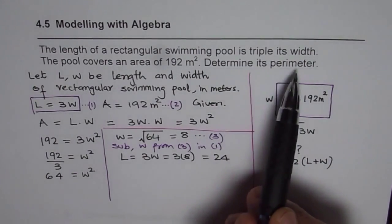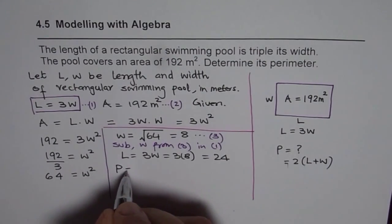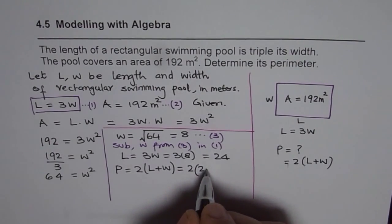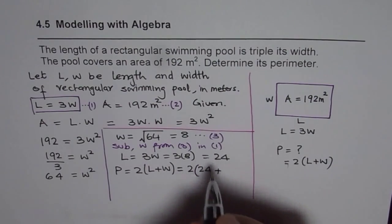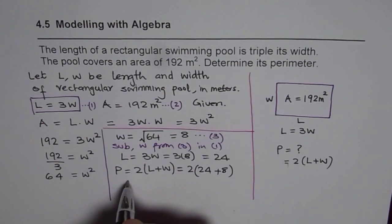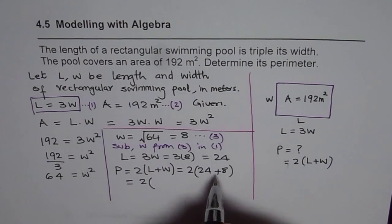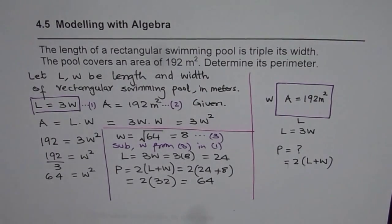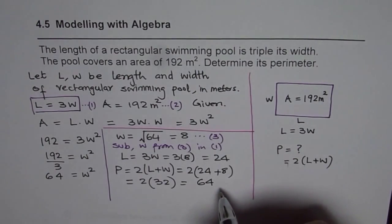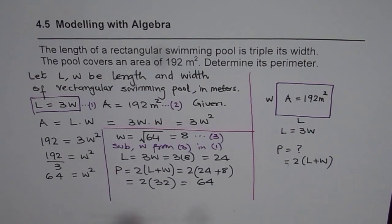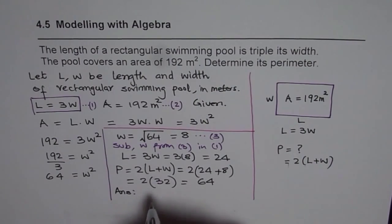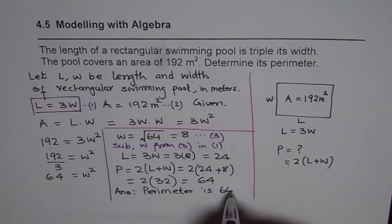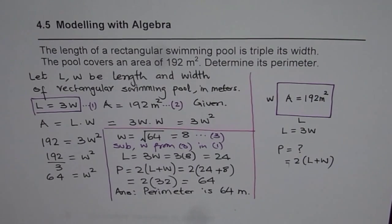Now the question asks us to determine the perimeter. Let perimeter P equal 2 times (length plus width). That means P = 2 × (24 + 8) = 2 × 32 = 64. So the perimeter of this rectangle is 64. Remember to write down units in your final answer — the perimeter is 64 meters.